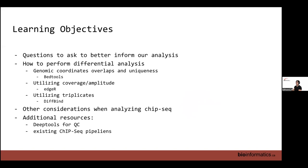One approach we've touched on but will go into more depth is comparing via genomic coordinates — to identify overlaps and elements that are not overlapping between your files. To do so we are going to use bedtools. We will also include the context of coverage and amplitude, and the main statistical driver for that will be edgeR.